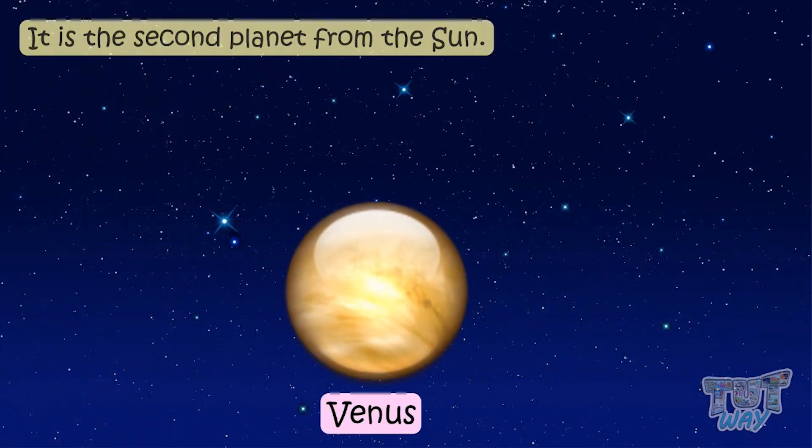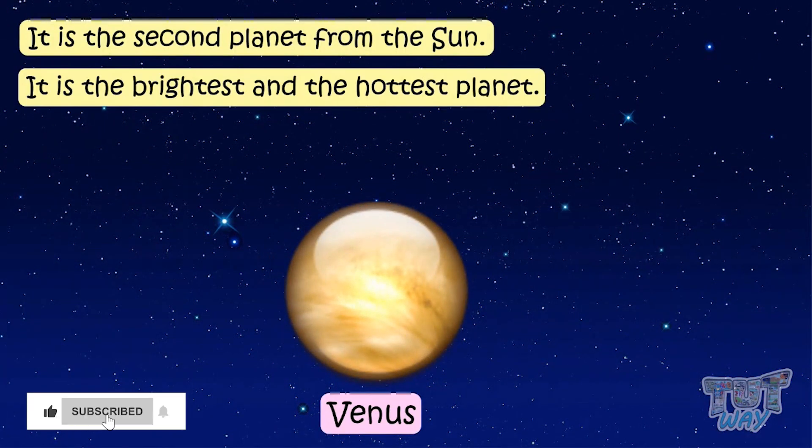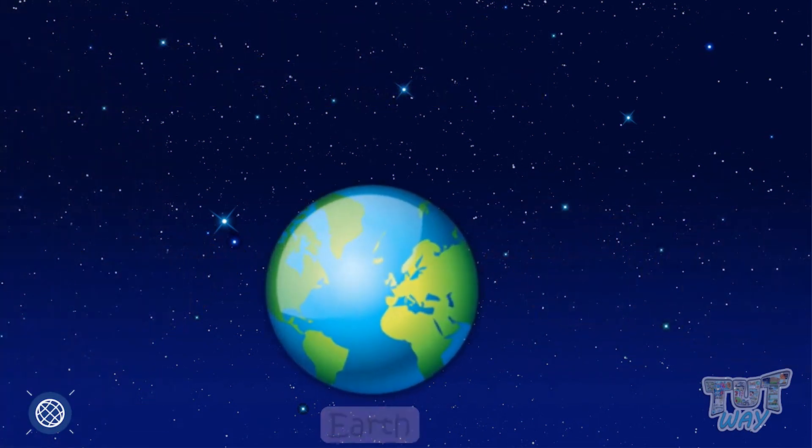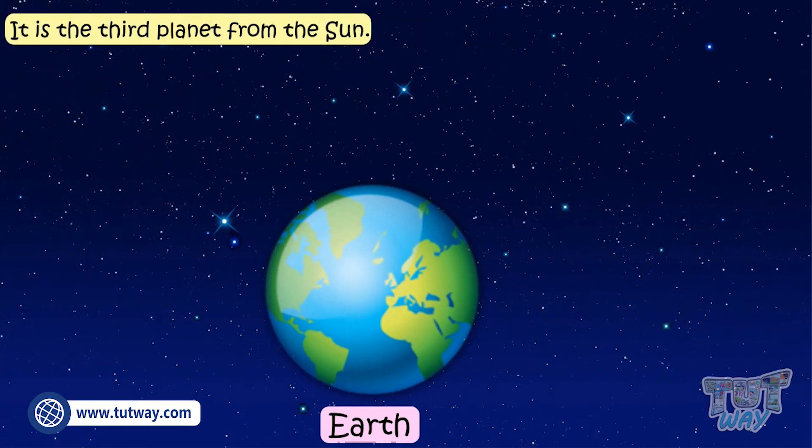Venus is the second planet. It is the brightest and the hottest planet, kids. So Mercury is the closest to the sun, but Venus is the hottest planet, not Mercury.